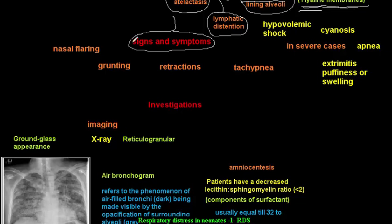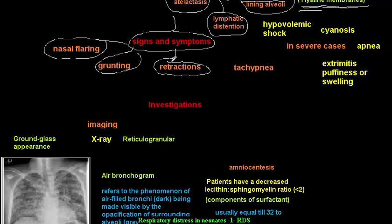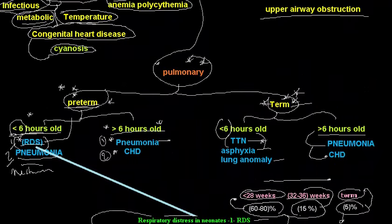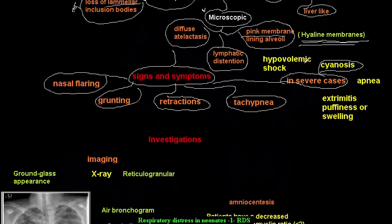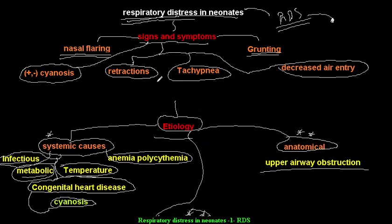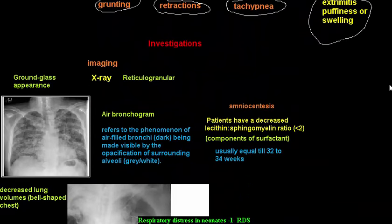The signs and symptoms of respiratory distress syndrome follow the same pattern as general neonatal respiratory distress: starting from the nose, nasal flaring and grunting; then suprasternal notch retraction or intercostal retraction; tachypnea; and in severe cases, cyanosis, hypovolemic shock, apnea, and extremity puffiness or swelling.